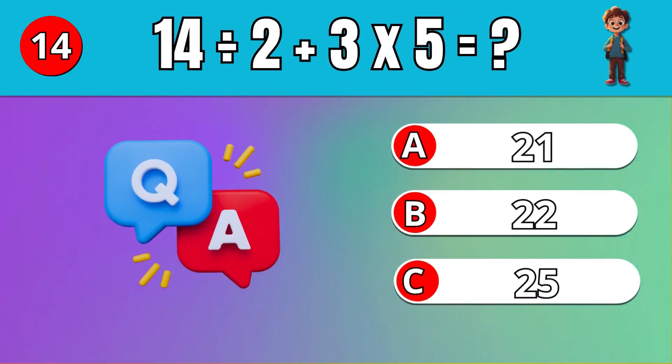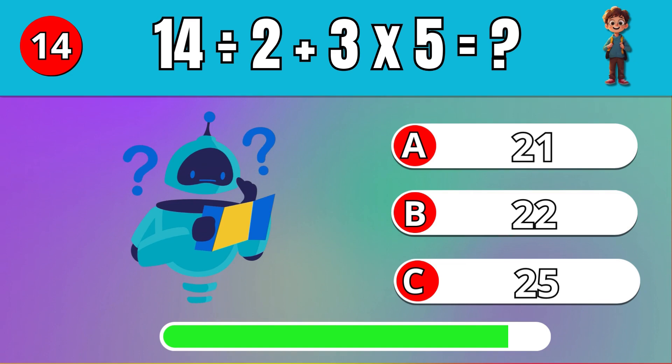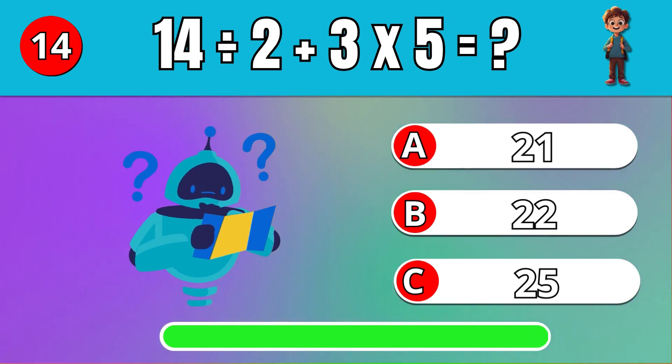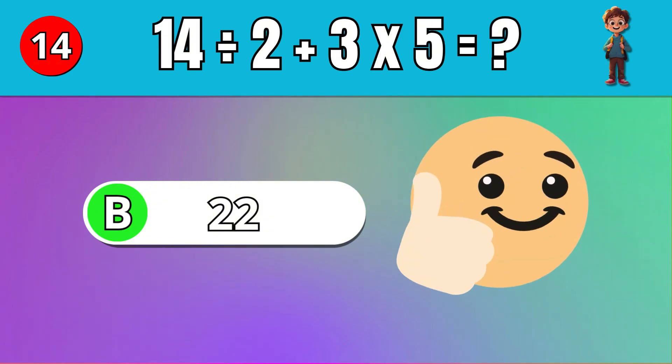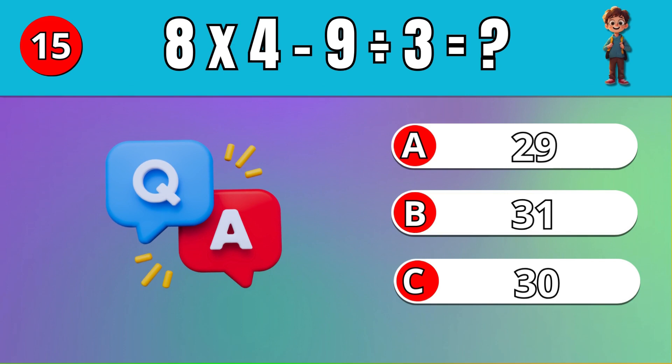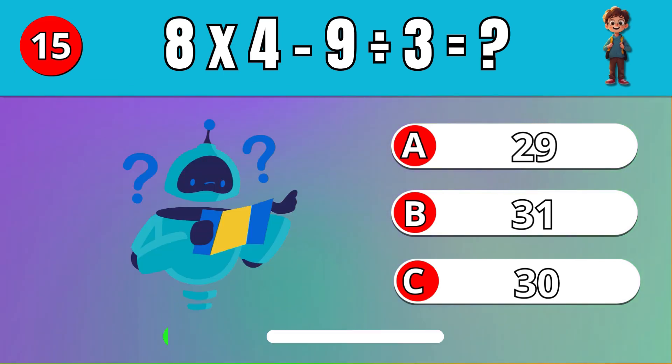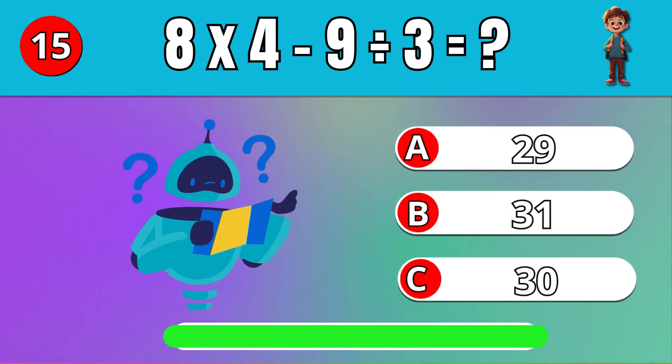What is 14 divided by 2 plus 3 times 5? What is 8 times 4 minus 9 divided by 3? 29.